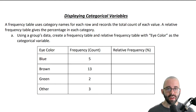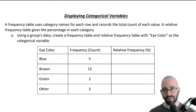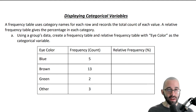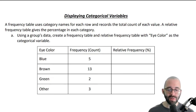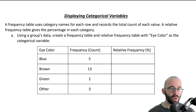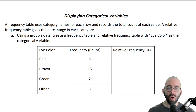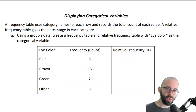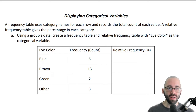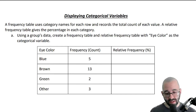We're going to start this unit by talking about different ways of displaying categorical variables. We're going to start by showing the data in a frequency table. A frequency table just uses category names on the left for each row and then records the total count of each value. Almost always, we're going to have relative frequency tables as well, where we have a relative frequency column, which talks about the percent.